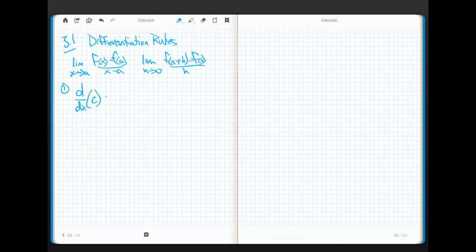What is the derivative of a constant? Well, think about that. Visualize what y equals c looks like. It looks like that. That's y equals c. It's a horizontal line.